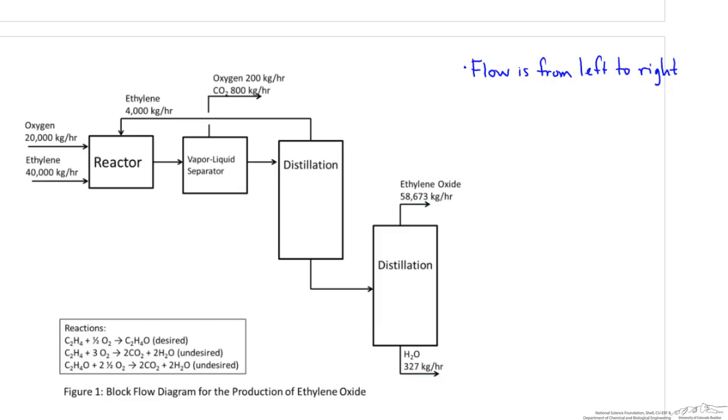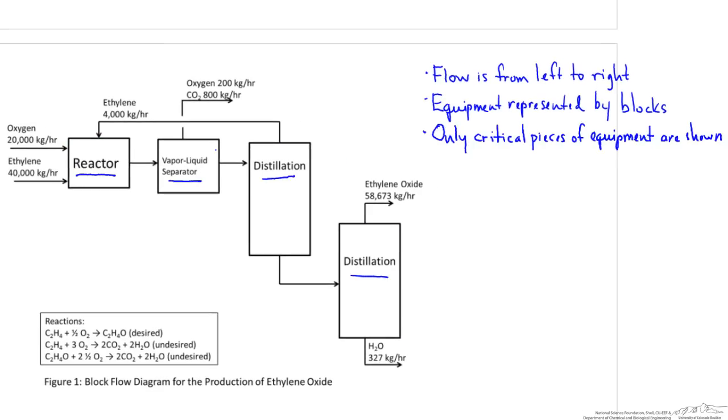Notice that equipment is represented by blocks. Be careful not to overcomplicate a diagram like this with detailed shapes. Notice also that only critical pieces of equipment are shown. I would say at the very least, reactors and separators need to be shown on a diagram like this. Reactors and separators are instrumental in chemical engineering processes.